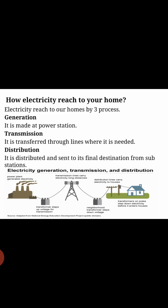How does electricity reach your house? Electricity reaches our homes by three processes. The first is generation — electricity is made at power stations, as shown in the diagram. The second is transmission — electricity is transferred through power lines to where it is needed.